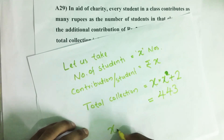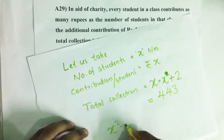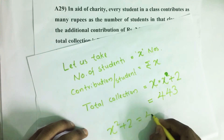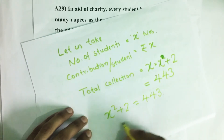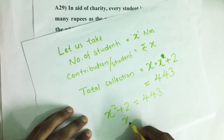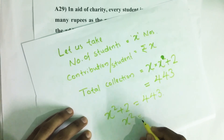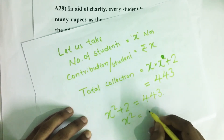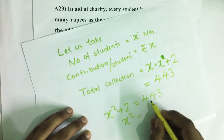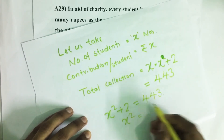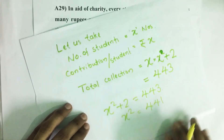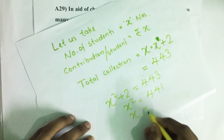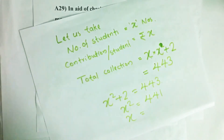That means X into X, that is X squared plus 2 equals 443. Then X squared equals — taking 2 to the right side — 443 minus 2, which is 441.